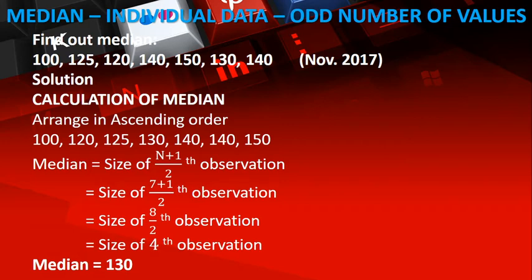We count again: 1, 2, 3, 4. The fourth value is 130. So the median is 130. This is how we find the median when there are an odd number of values.